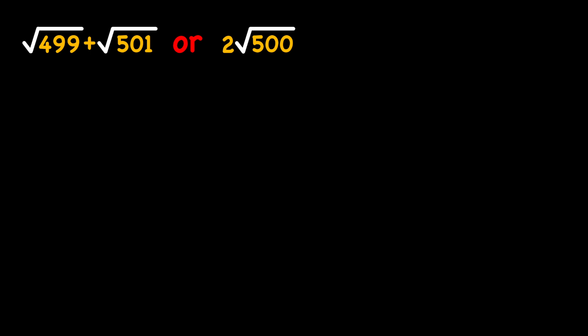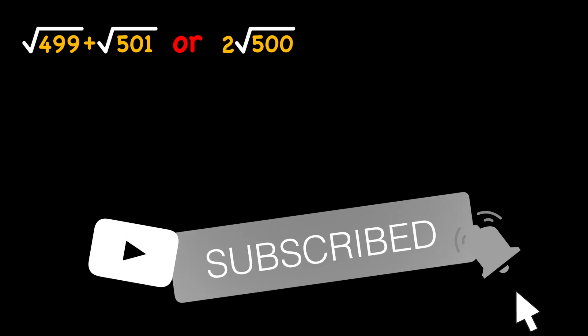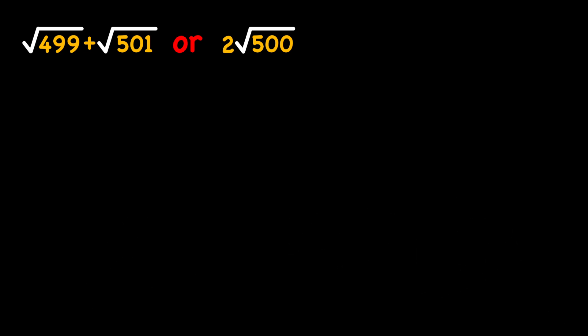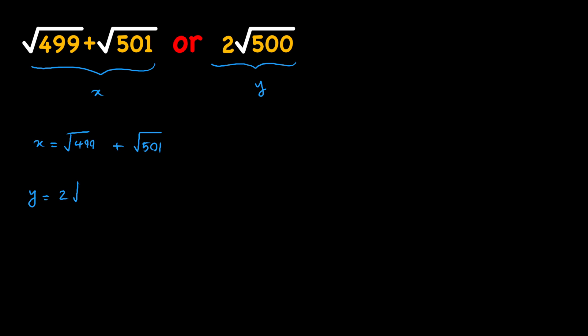In this video we're going to be comparing two numbers: square root of 499 plus square root of 501, and two times the square root of 500. The goal is to find out which one is larger. Let's say x is square root of 499 plus square root of 501, while y is two times square root of 500.